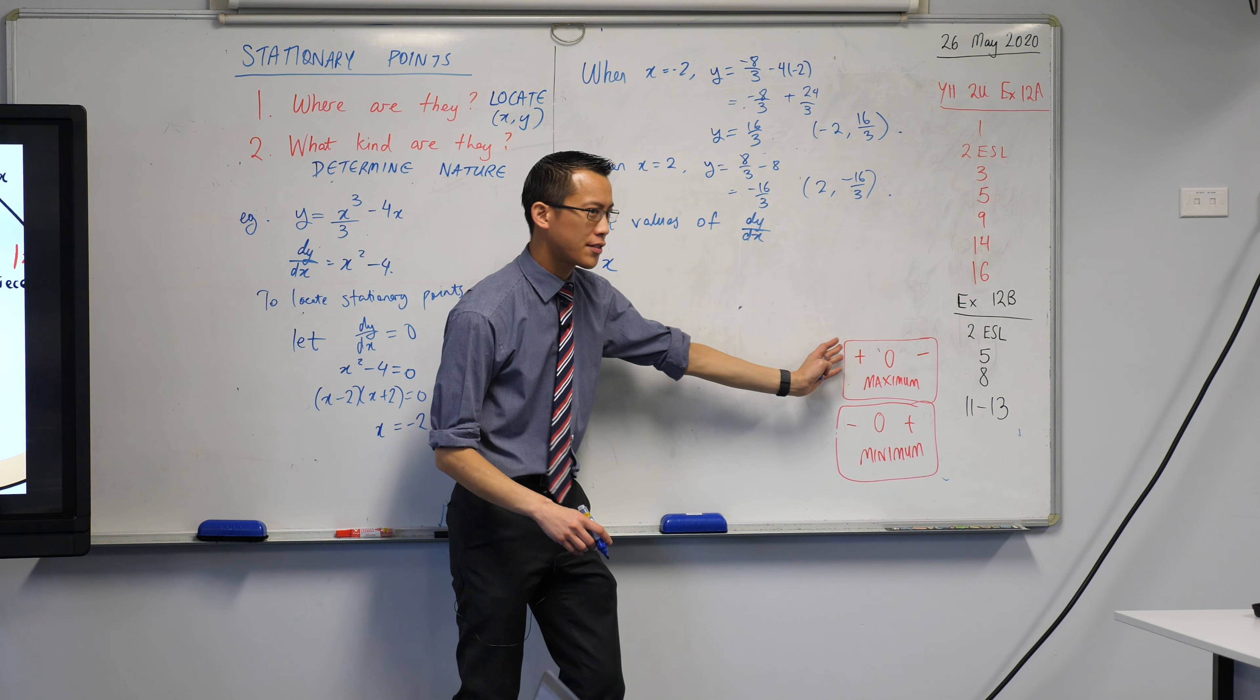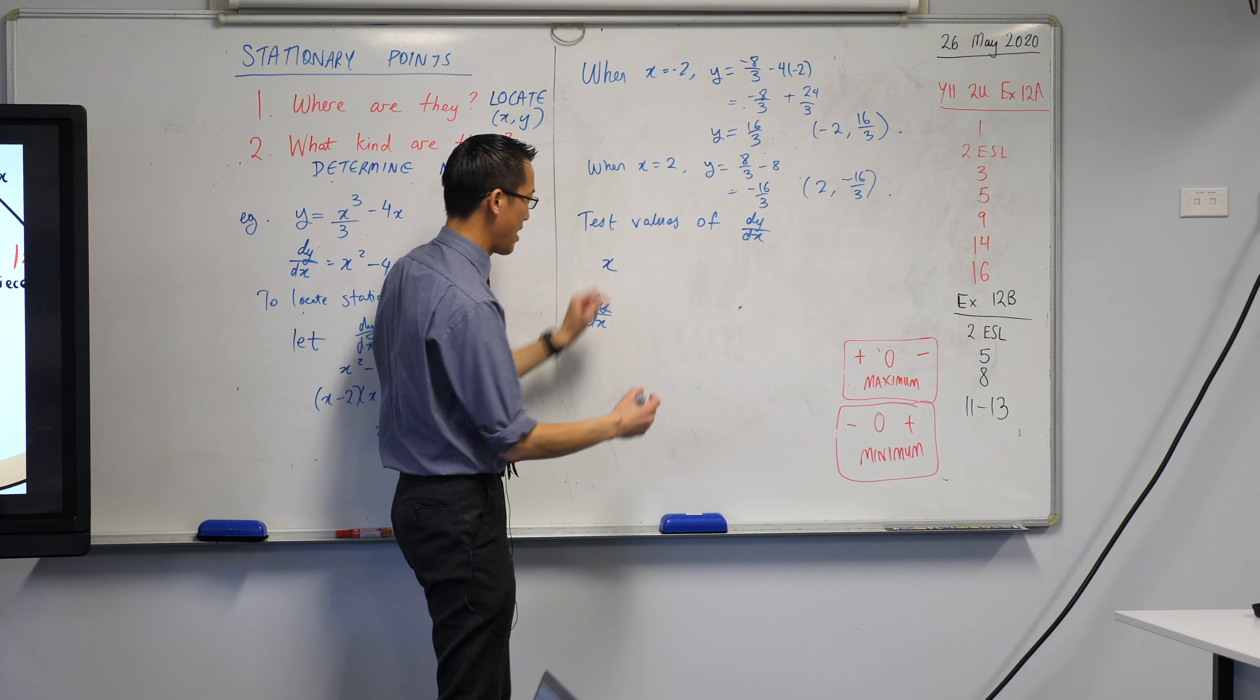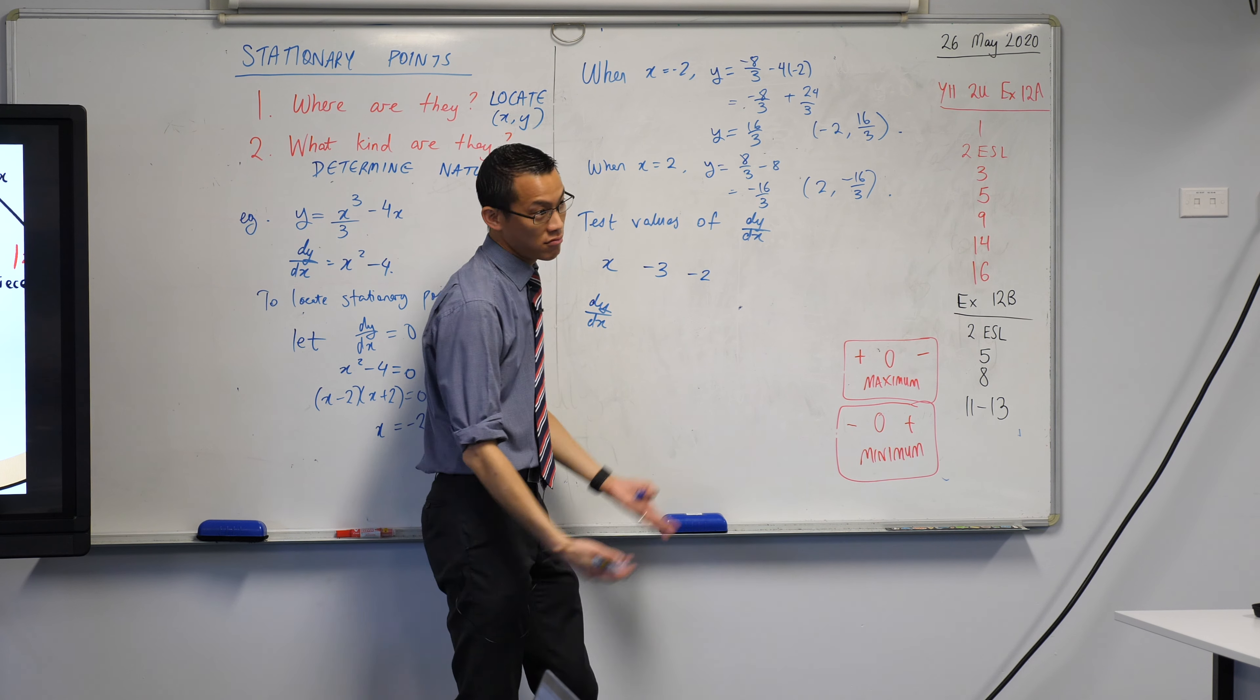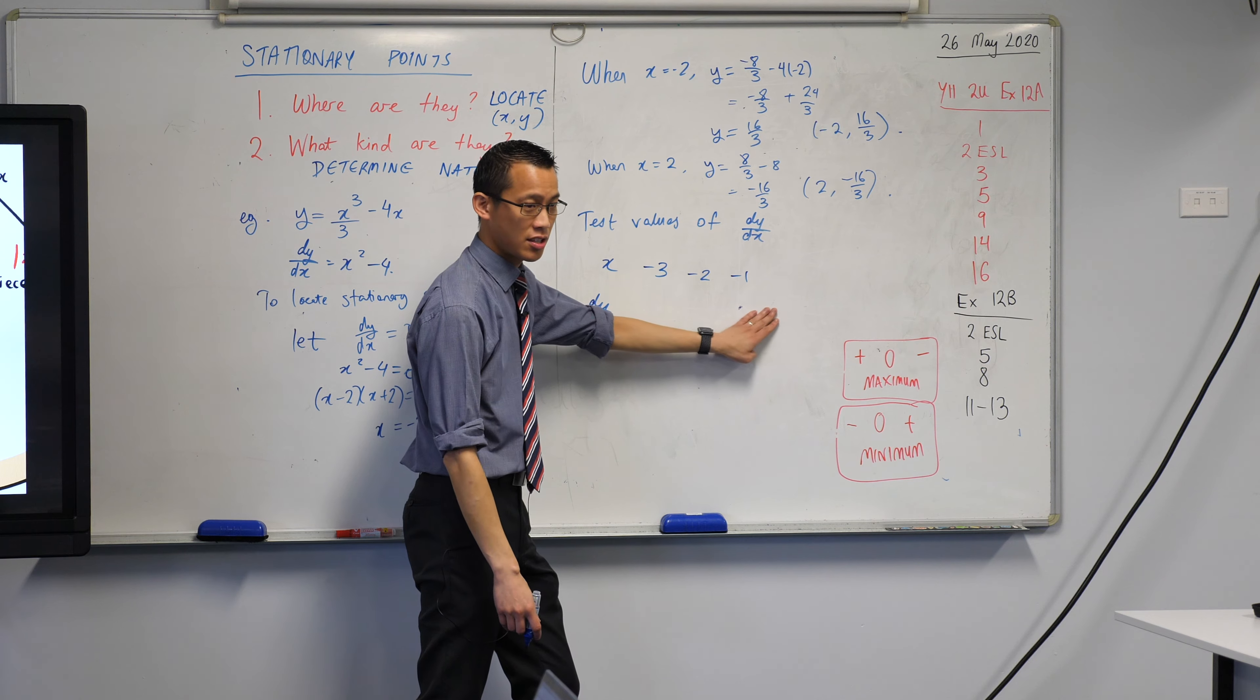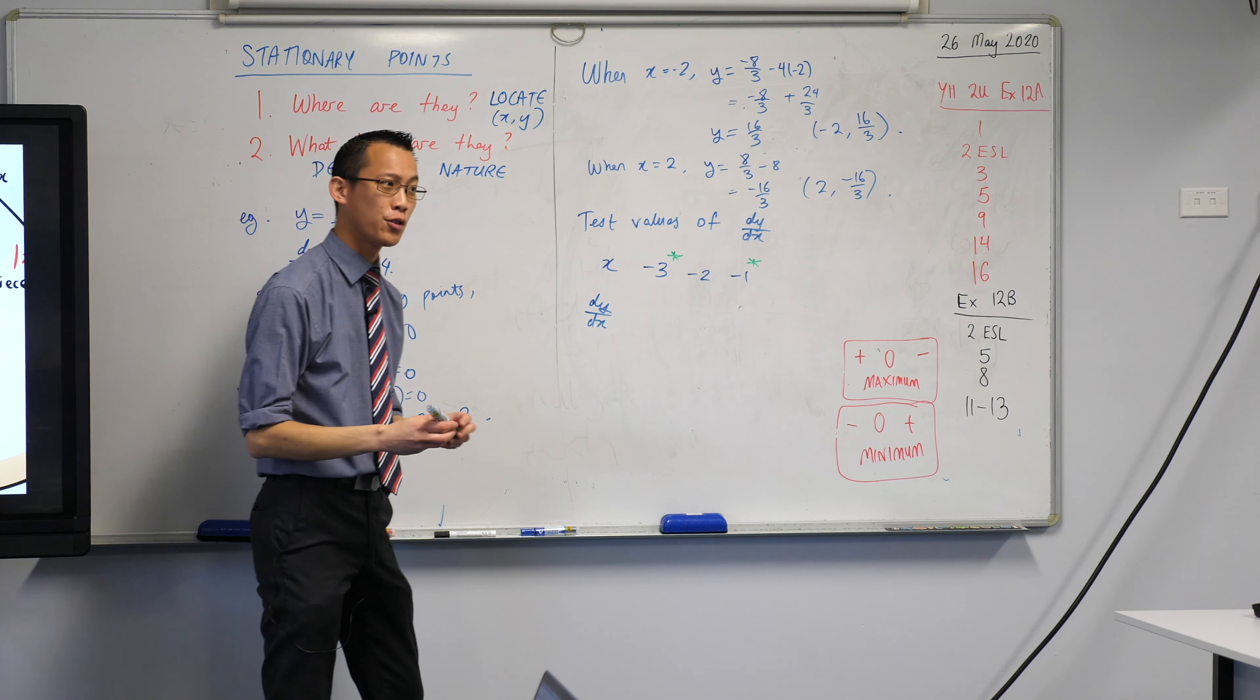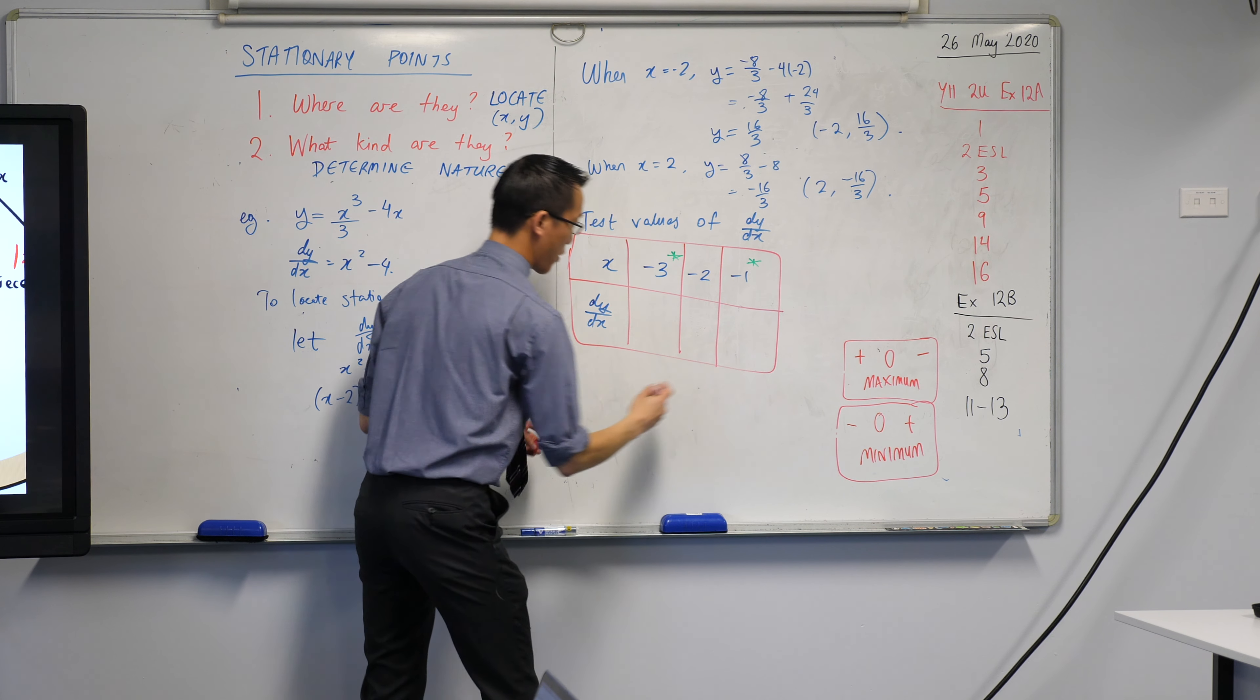We need particular values of x and then the values of the derivative for those x values. And I just need to know what's happening on the left and what's happening on the right. So for this guy here, what's a value a little bit to the left of negative 2? How about negative 3? That's a bit to the left. We know what's happening at negative 2. What's a little bit to the right of negative 2? How about negative 1. This is just to the left, just to the right. Now, I'm actually going to put an asterisk on these. We're going to come back to these values later because you'll see you actually have to be quite careful with your selection of these. But for now, to keep the example simple, let's have a go at just this because it will do the job for us.